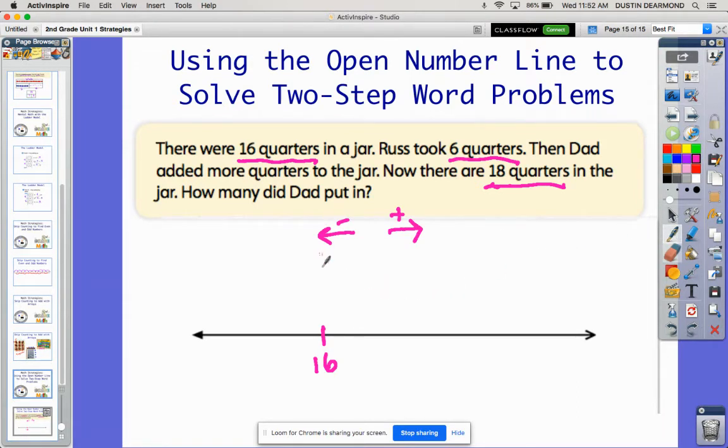So there were 16 quarters in the jar. That's where we're starting, and Russ took six quarters out. So he subtracted six quarters. So I'm going to jump back, and I can jump back six because I'm subtracting six. And I did that in my head because I can make a 10, which we've already learned how to make a 10. So I jumped back six and got to 10. So when Russ took out the six quarters, there are now only 10 quarters left.